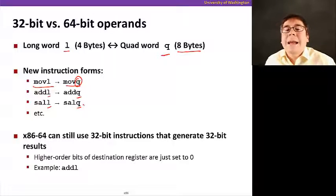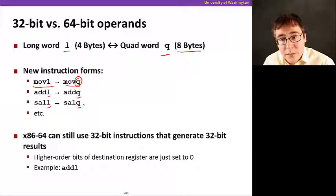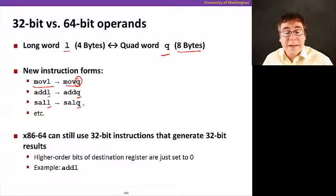And also note that x86-64 can also use all the 32-bit instructions that generate 32-bit results. And like I showed in the previous slide, we can reference the low order 32 bits of some 64-bit registers with the same name as we used in 32-bit ISA. And the high order 32 bits are set to zero.